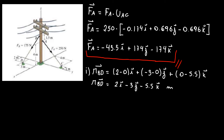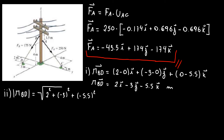Now our second step is the magnitude of my position vector BD. So I have the square root of 2 squared plus minus 3 squared plus minus 5.5 squared.